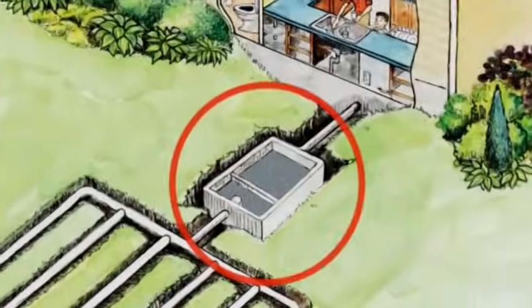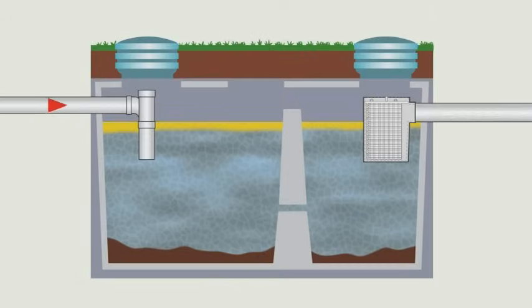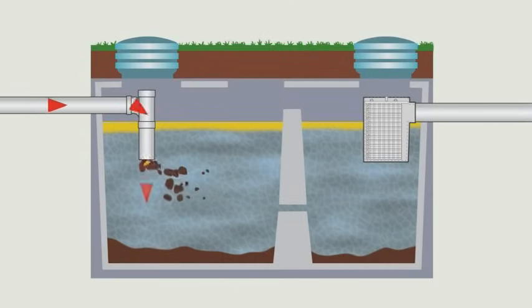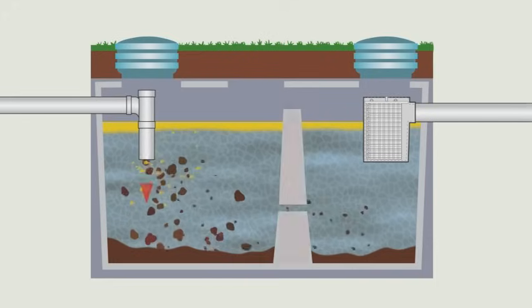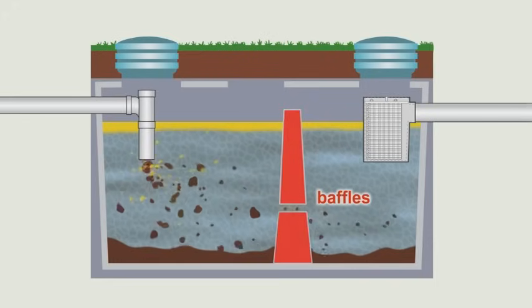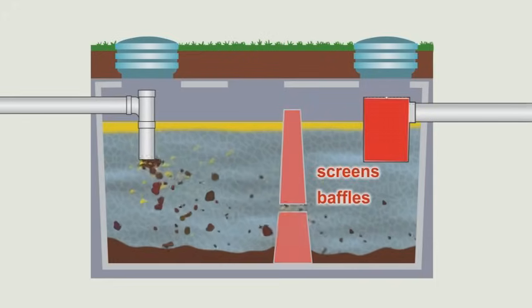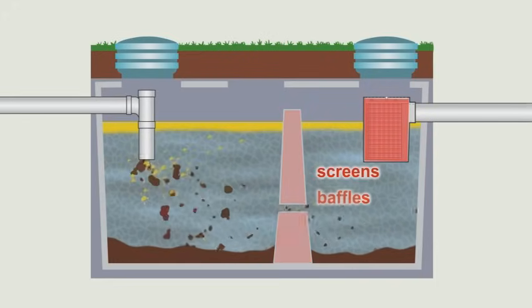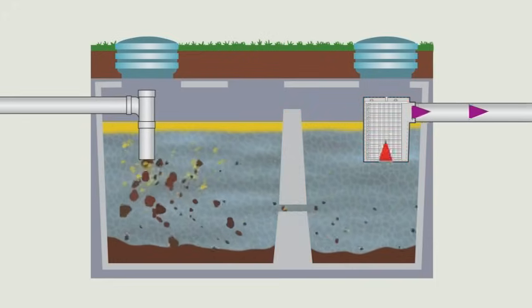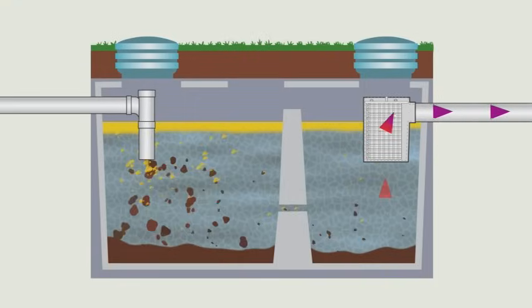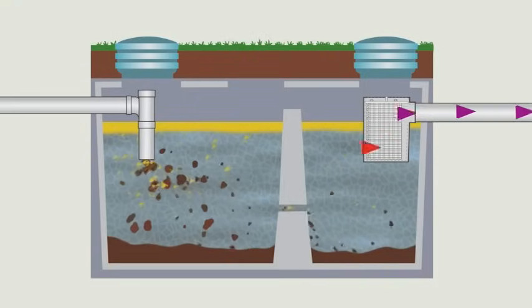The waste flows to the first compartment of the tank where the heavy solids settle, and the lighter materials — fats, oils, and greases — float to the top as scum. Baffles and screens keep this scum layer from flowing out to the leaching bed. The scum is removed when the tank is pumped out during regular maintenance.